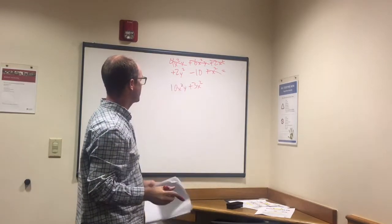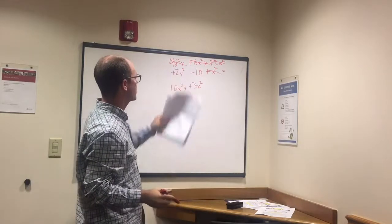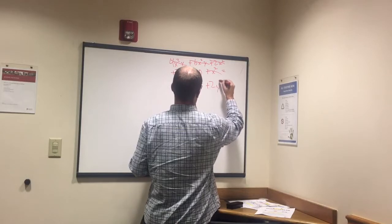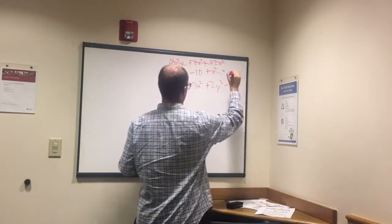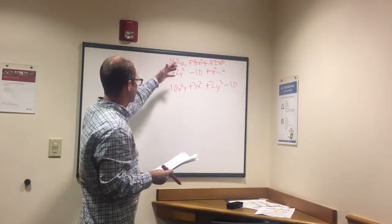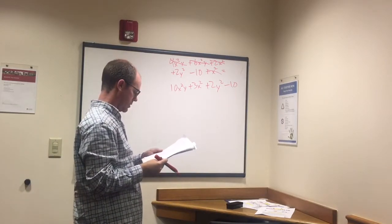We have 2y squared minus 10, we're just going to carry that down. And there we go. It looked big and complicated, it wasn't actually all that hard.